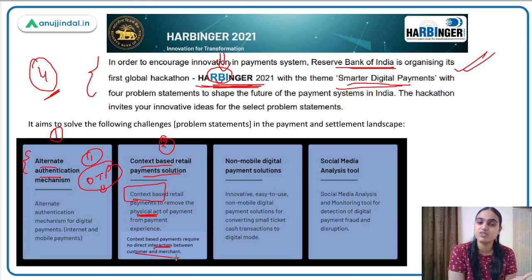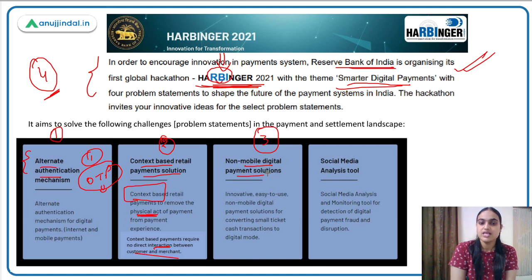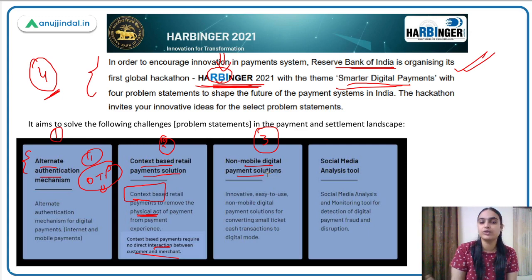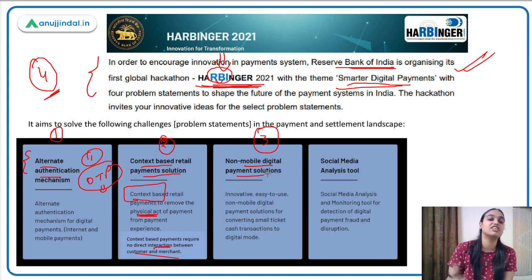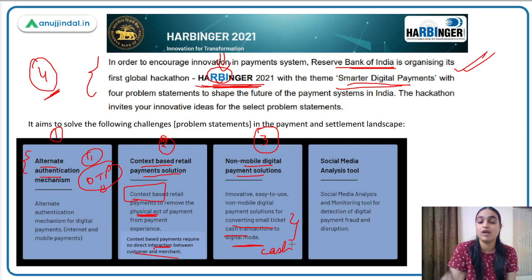If you as a participant have solutions for this, technology-based innovators can suggest them to RBI under this event. The third problem statement is non-mobile digital payment solutions. There are still many people relying on cash transactions who have not shifted to mobile or digital solutions, especially in rural areas due to lack of internet or smartphones. The goal is to come up with innovative, easy-to-use non-mobile digital payment solutions for converting small-ticket cash transactions to digital mode.